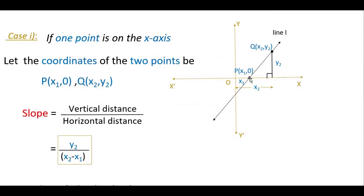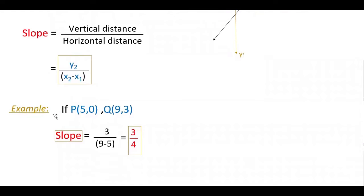If you see here, this line is intersecting the x-axis at x1 comma 0 and another point is x2, y2. So we have to find the slope of this line. Here this distance is y2 and this distance is x2 minus x1, because this is x1 and this is x2. It is very easy to find slope in this case because slope is vertical distance by horizontal distance. So slope is y2 by x2 minus x1, because here y1 is 0 since this point is on the x-axis. For example, if you take any two points P(5, 0) and Q(9, 3), then slope is equal to y2 which is 3, so 3 by 9 minus 5, that is 4. So 3 by 4 is the slope of this line.